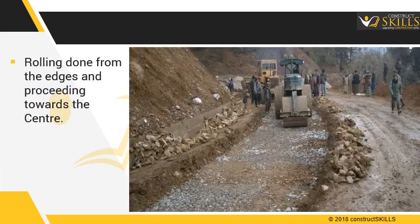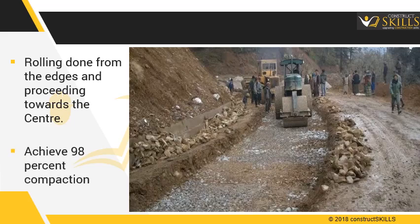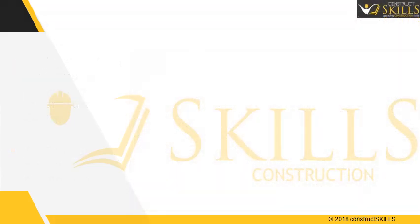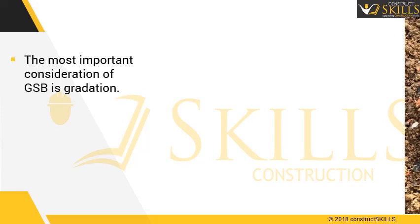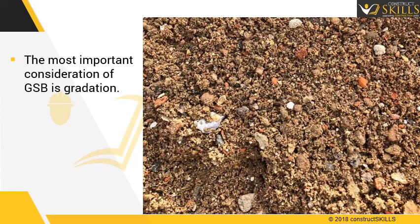Rolling is done starting from the lower edge and proceeding towards the center. It should be continued till at least 98% of maximum density of the material is achieved. The most important consideration of GSB is gradation — it should match the required specifications.